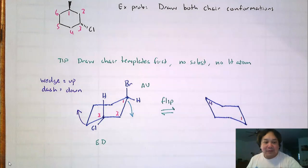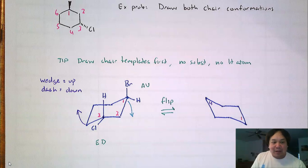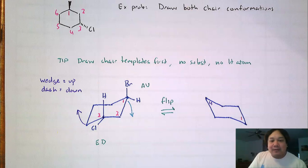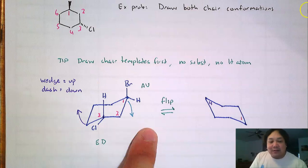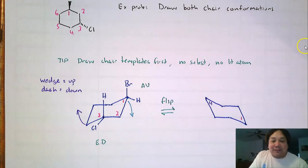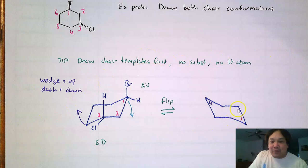The other half of the problem involves drawing the other chair conformation — this is called a chair flip. You're not flipping the molecule; you're pushing the carbons to make the other chair. You take carbon number one and push it down, and take carbon number four and push it up. My challenge to you: which one is carbon number two in the new chair? We'll take care of the rest in the next video.